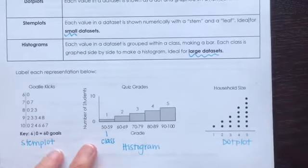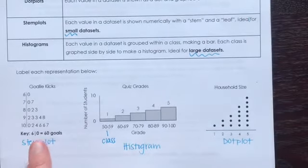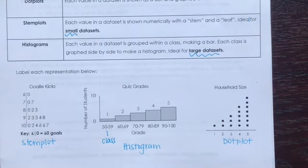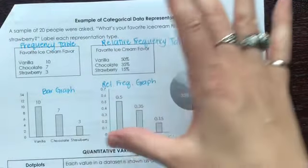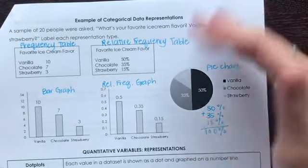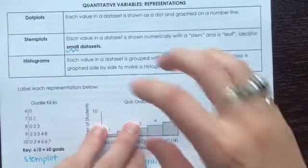We never use dot plots, stem plots, or histograms for categorical data, and we never use the categorical representations for quantitative data. We keep those separate and make sure we only use the correct representation for the correct data type.